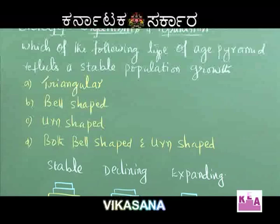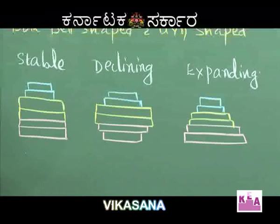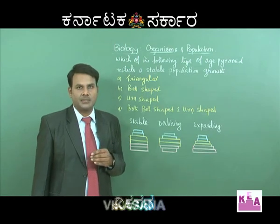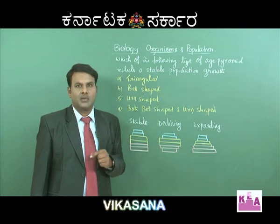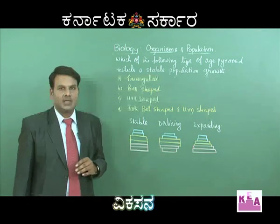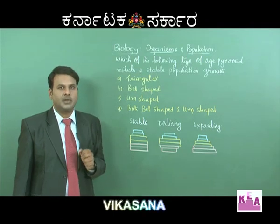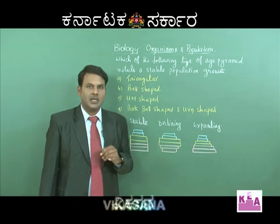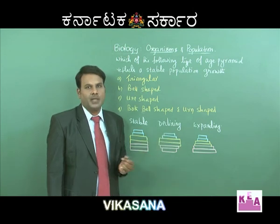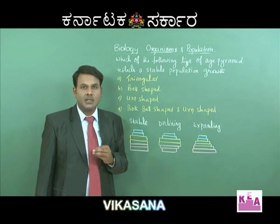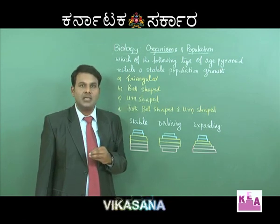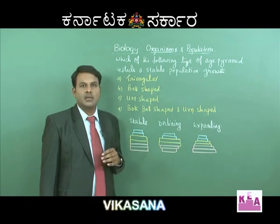In any population, individuals are grouped into three categories with respect to reproduction: pre-reproductives, reproductives, and post-reproductives. The number of individuals in these groups, when represented in a graph, assumes a pyramid shape called the age pyramid. The age pyramid indicates whether a population is stable, declining, or expanding, and can also indicate the presence of competitors, predators, or the effectiveness of pesticides.